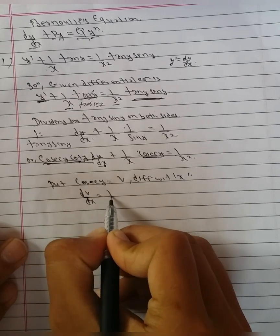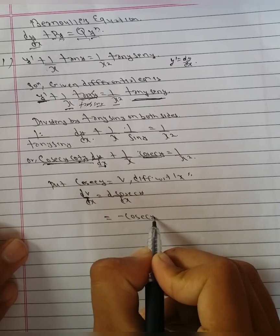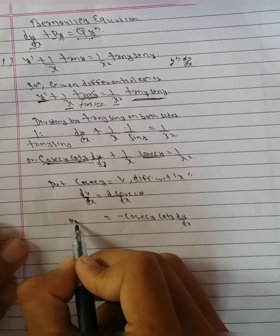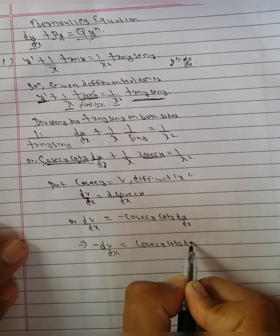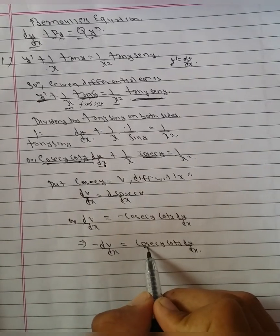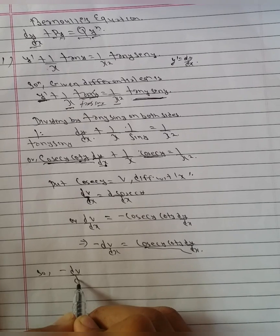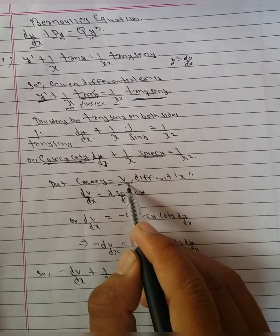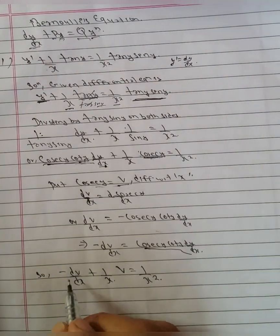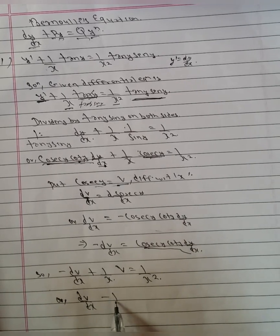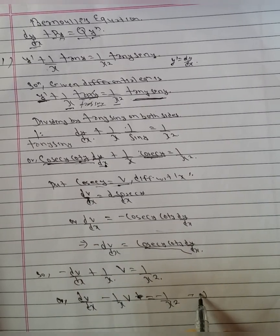Differentiating cosec y = v with respect to x gives dv/dx = −cosec y · cot y · dy/dx. Substituting back, the equation becomes: dv/dx − (1/x)v = −1/x², which is equation (1).